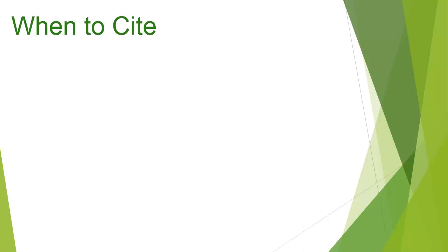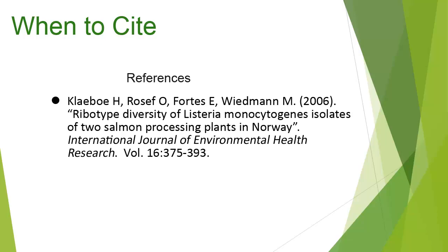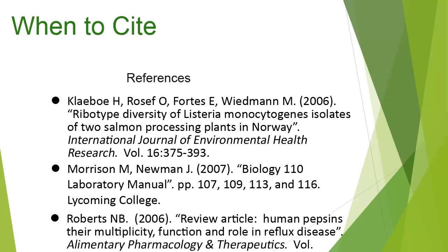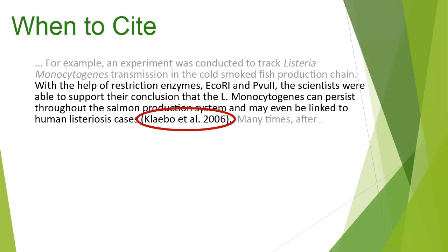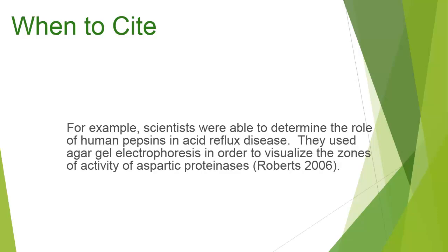Regardless of whether you paraphrase, summarize, or quote, you need to give credit to your sources of information. It is not enough to simply list the resources you used at the end of the paper. You need to note in your paper where each piece of information came from. This means you will attach an in-text citation to each sentence that uses information from a source. General statements and common knowledge do not need to be cited. If you have multiple sentences in a row that use information from the same source, you can place one citation at the beginning or the end of those sentences.